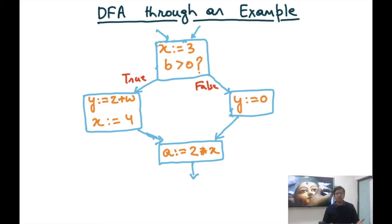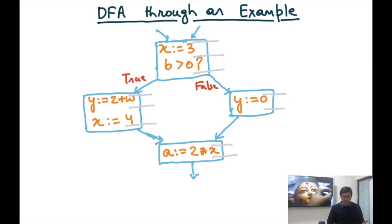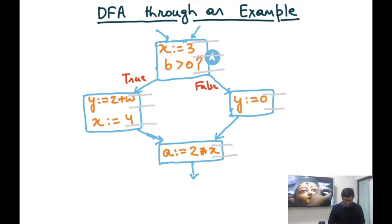We're going to do the global constant propagation DFA. First, we're going to see what the program points are. The program points are all the points before and after every statement. Within a basic block, we can merge the after of the previous statement with the before of the next statement. In general, there could be twice as many program points as there are statements.